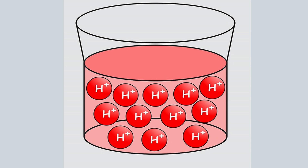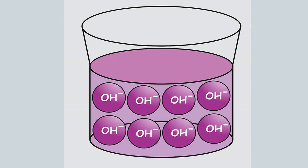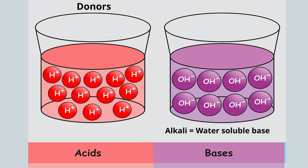When an alkali substance dissolves in water, it releases negatively charged particles called hydroxide ions. Remember, an alkali is a base that is water-soluble. Acids are called hydrogen ion donors, and bases are hydrogen ion receptors.